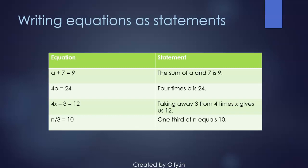4x minus 3 is 12. So writing it in simple English becomes taking away 3 from 4 times x gives us 12. And last but not least is n upon 3 equals 10: one third of n is 10, and that's how you write it in the statement format.